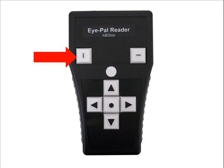To the right of the Save button is the Recall button. It is marked with a horizontal line. This button is used to recall documents that have been saved.